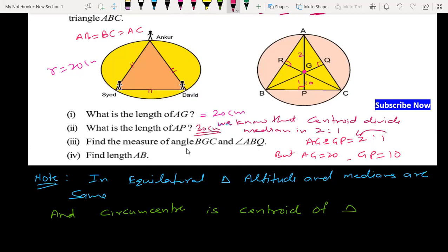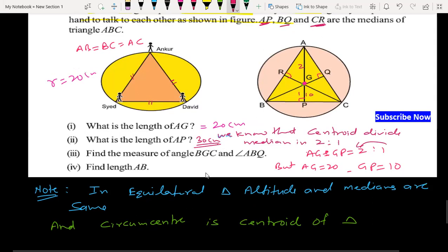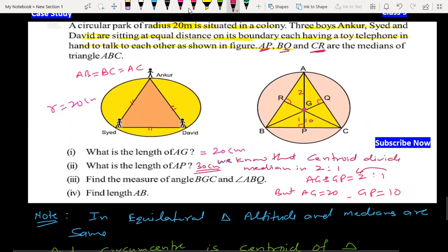Next step, what is the measure of angle BGC? Angle BGC will be how much? In equilateral triangle, each angle is 60 degrees. So angle BGC is twice of angle BAC. By the theorem, any angle at center from a chord is double the angle at the other segment. So 2 into 60 is 120 degrees.